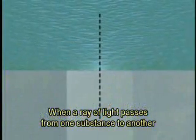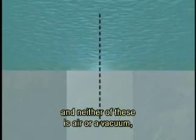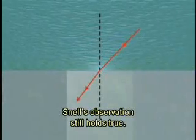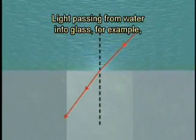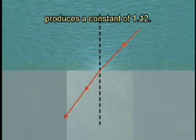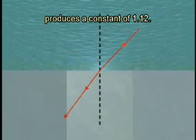When a ray of light passes from one substance to another, and neither of these is air or a vacuum, Snell's observation still holds true. Light passing from water into glass, for example, produces a constant of 1.12.